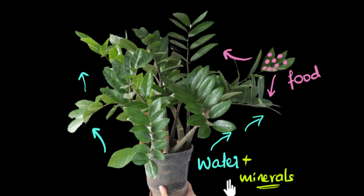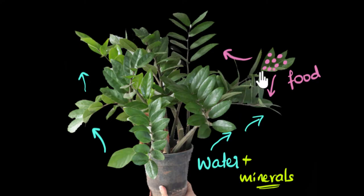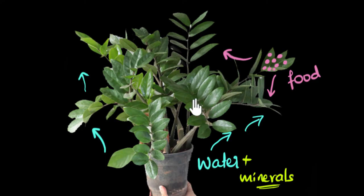Earlier plants didn't have a transport system and therefore were very tiny. If a plant is very tiny, transportation happens just by diffusion — a process where substances move from a region of high concentration to lower concentration. Food and water can easily diffuse to all parts of a tiny plant. But as plants get taller, diffusion becomes super slow and it's almost impossible to transport materials that way. This is where a specialized transport system is needed.